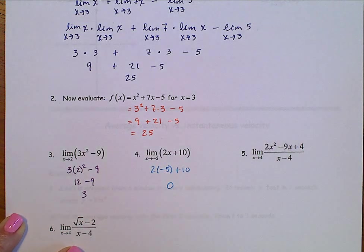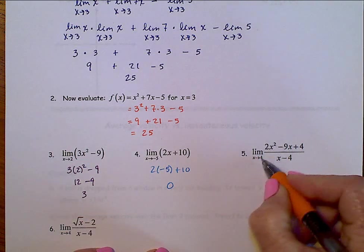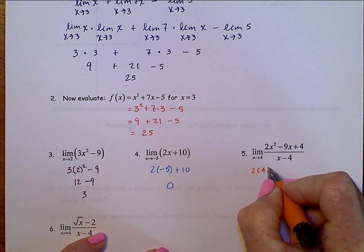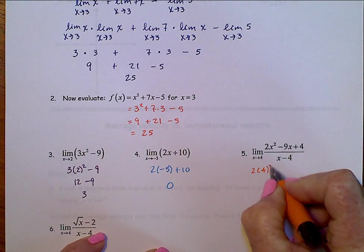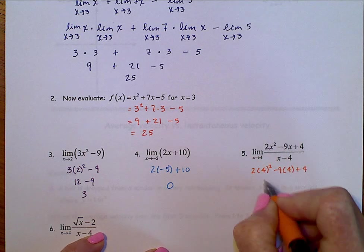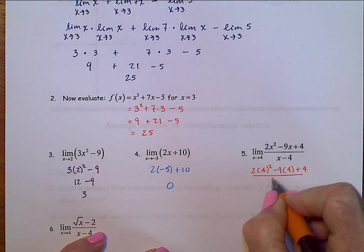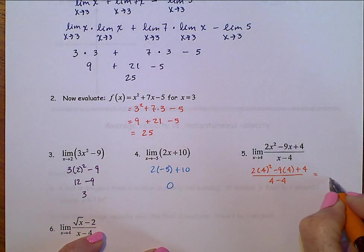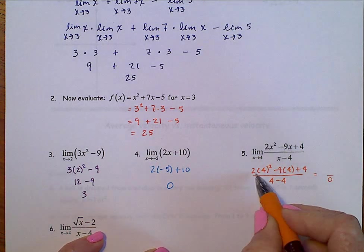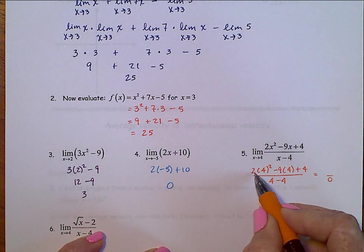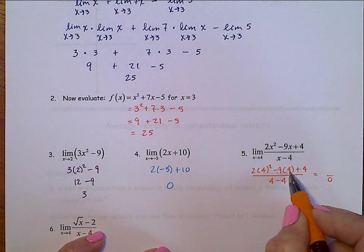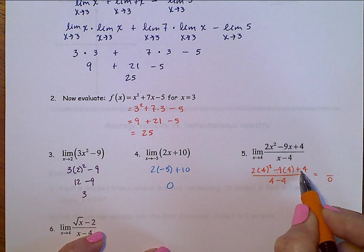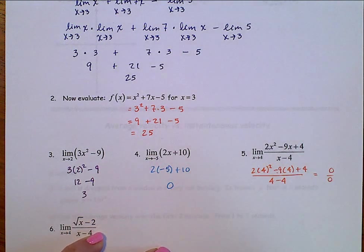How about this next one? Plug in a 4 here. It's 2 times 4 squared minus 9 times 4 plus 4, all over 4 minus 4. The bottom is 0. Top, 16 times 2 is 32 minus 36 plus 4, 0. Uh-oh. We run into trouble on this one, just substituting in.